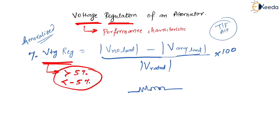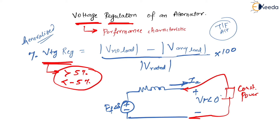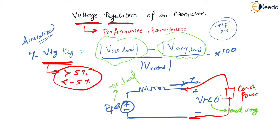Consider an alternator with EF at angle delta, terminal voltage VT at angle zero, and armature current IA. Connect a constant power output load. If regulation is more than five percent, that means the no-load voltage is more and the load voltage is less.